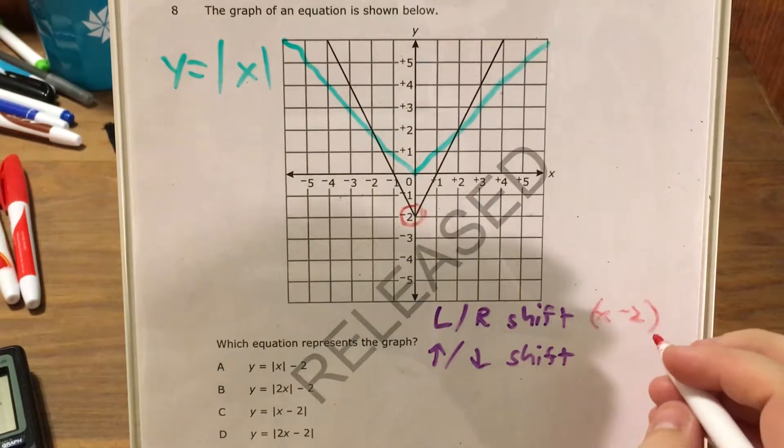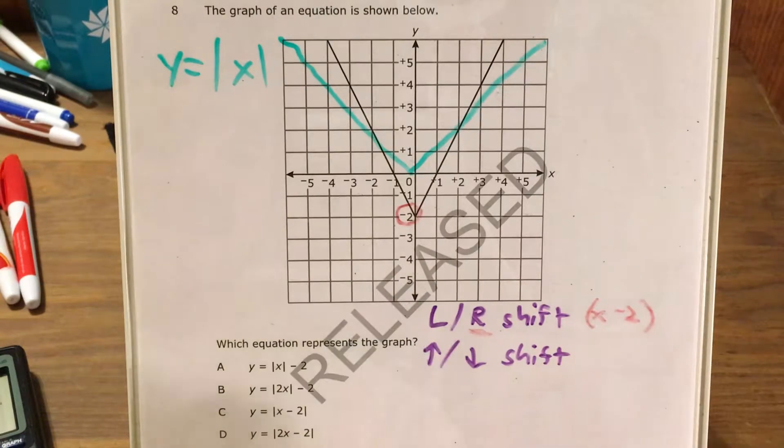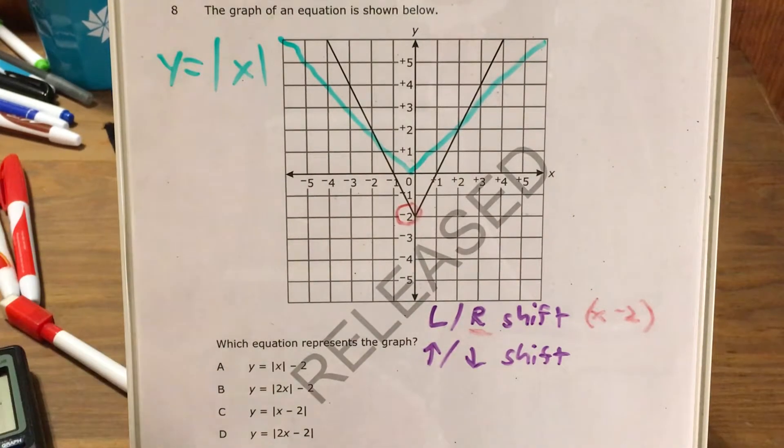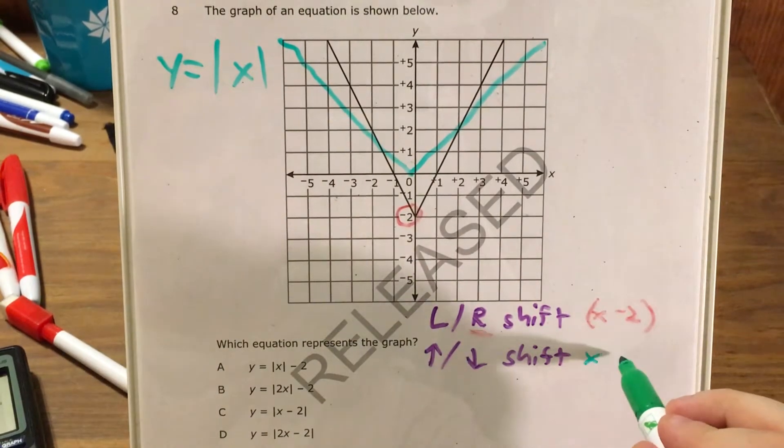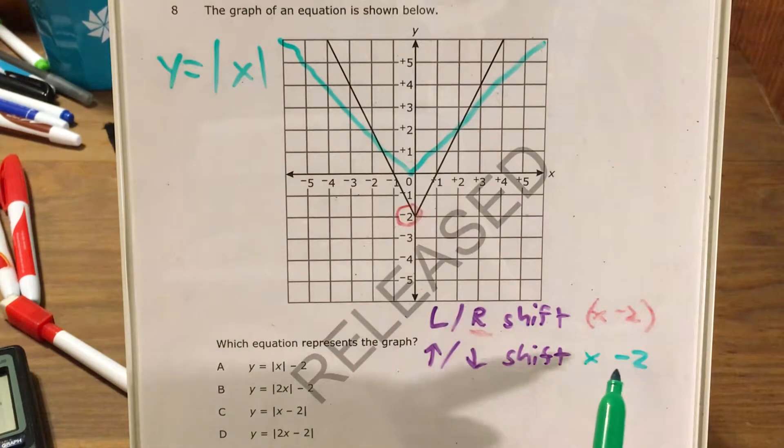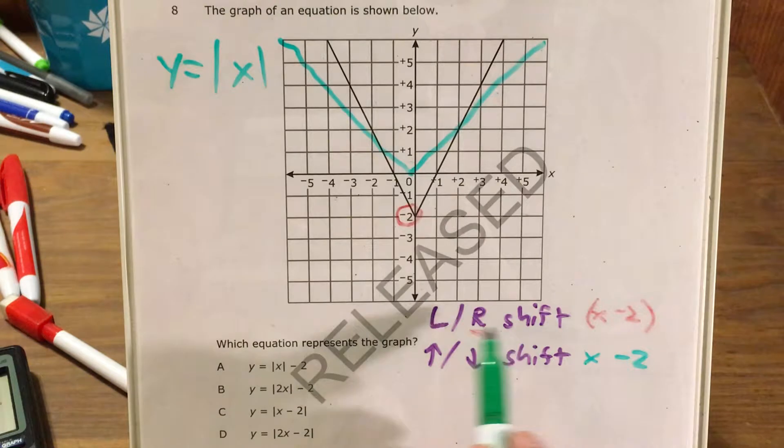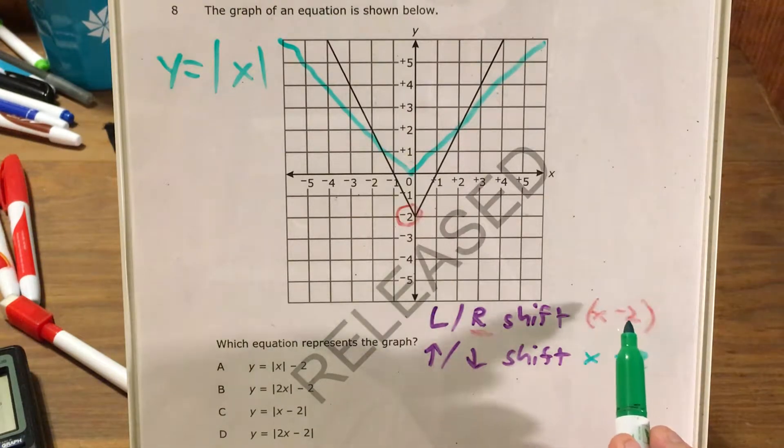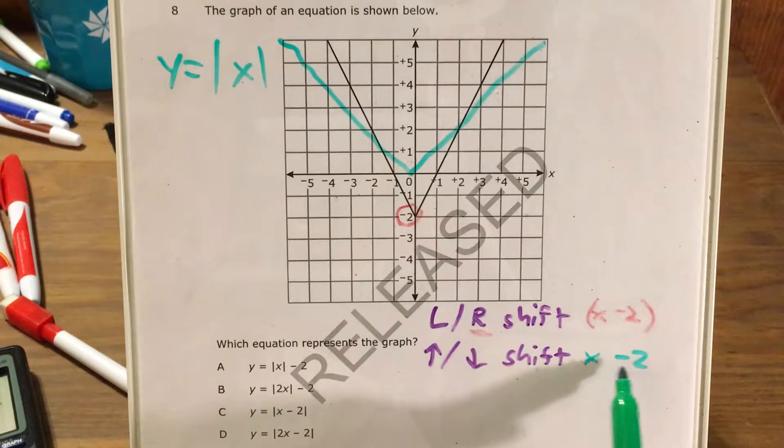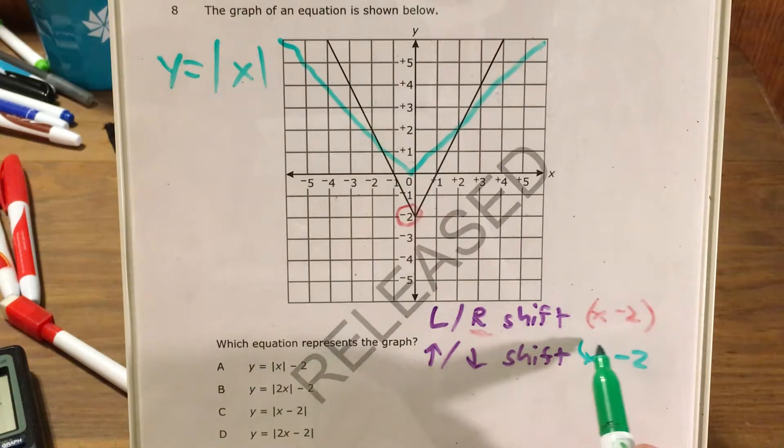I see x minus 2, and this would actually be 2 to the right because this is negative here. Whereas an up or down shift, I would see whatever my x expression is minus 2. So if it were a left to right shift, it would be inside the parentheses or the absolute value bars, but if it were an up or down shift, it would just be outside that. Let me put parentheses here to emphasize that.